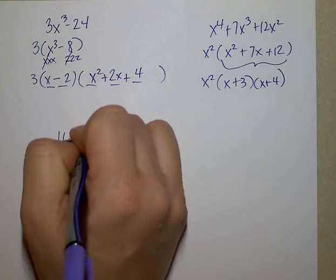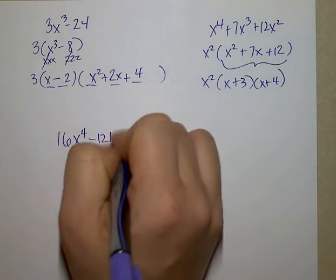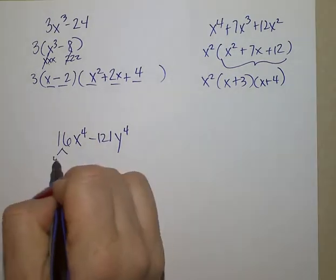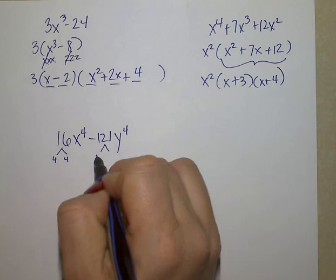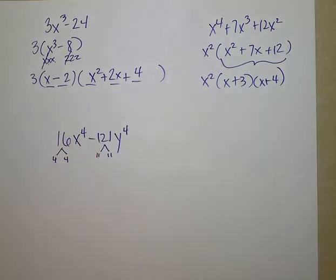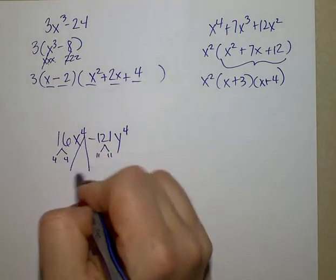16x to the 4th minus 121y to the 4th. Because this breaks into 4 times 4 and 11 times 11. Because they're perfect squares and I have subtraction, that's one reason I can go down further. The other reason is this breaks into 2 and 2. It splits in half equally.